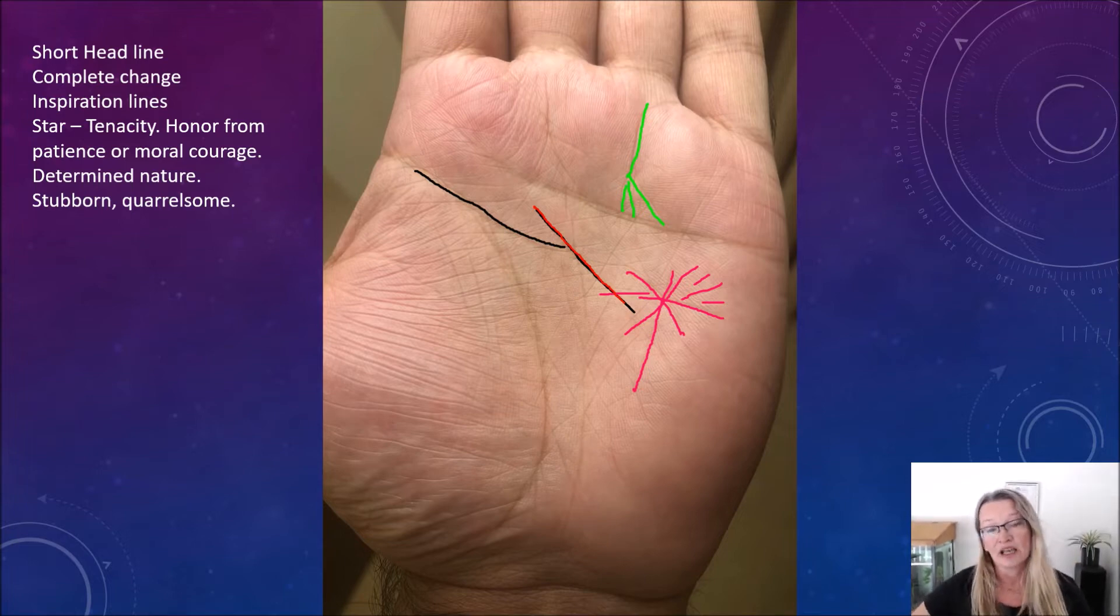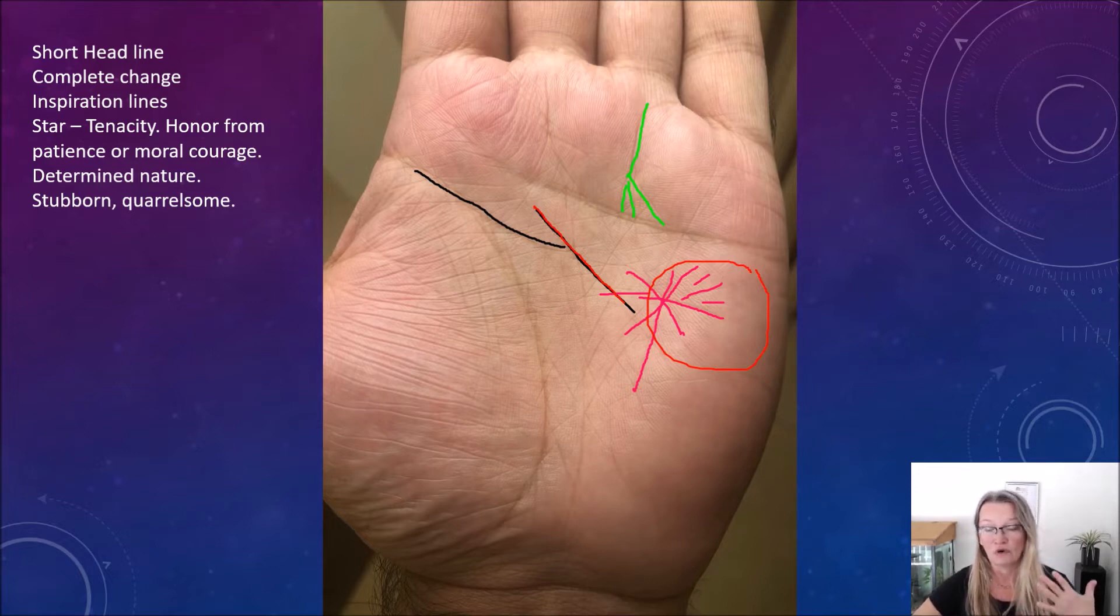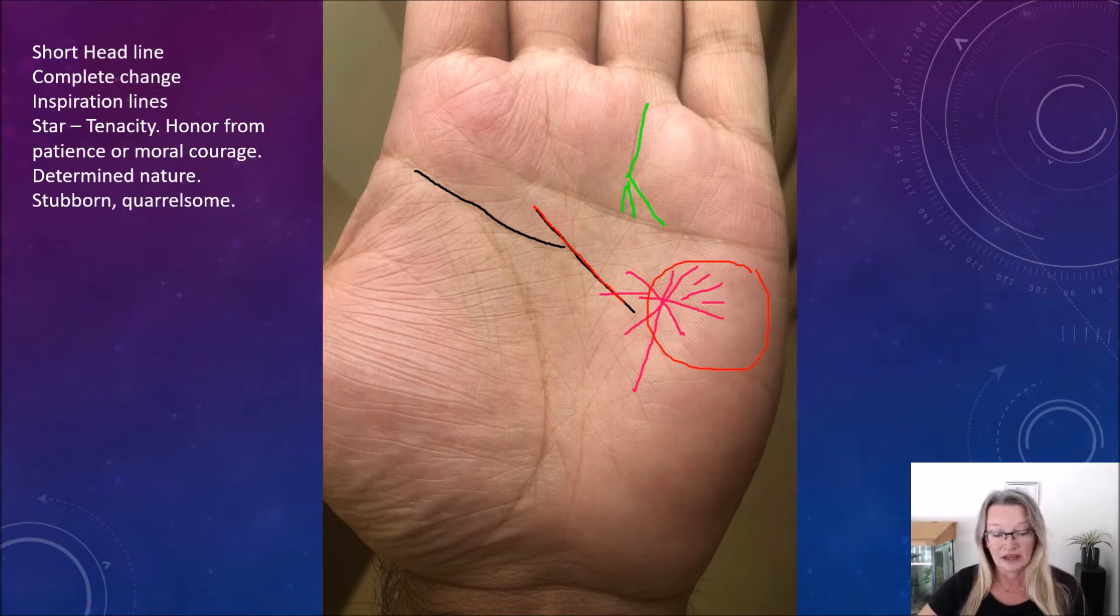And the star, very interesting as well. A star usually in the outer Mars area is a sign of tenacity. Someone who might get honors from being patient or have some kind of moral courage. In general, it shows a determined nature. Someone who's quite stubborn, but also quarrelsome. Which is interesting because if he is a practicing lawyer, they have to argue their point. So that makes sense to have that kind of a star right there.